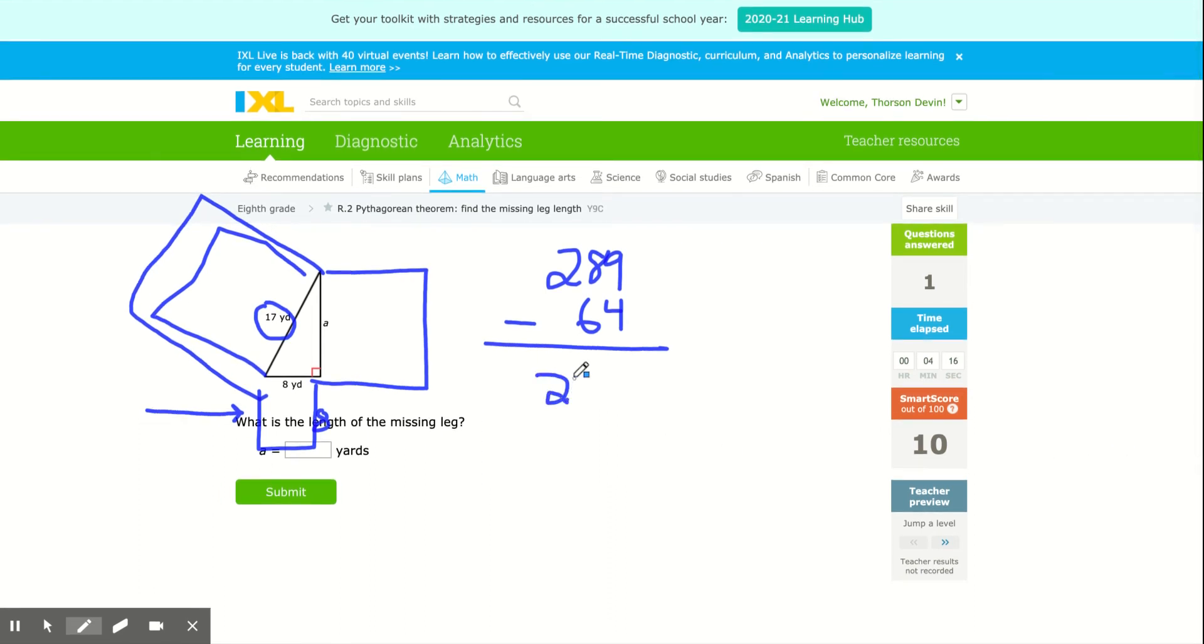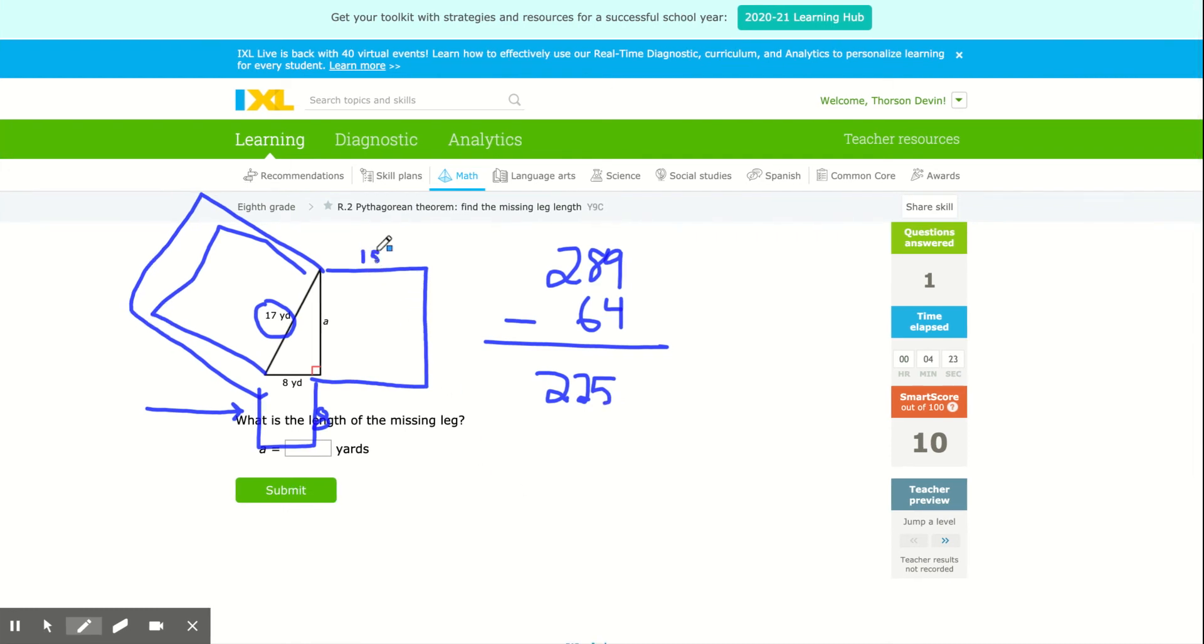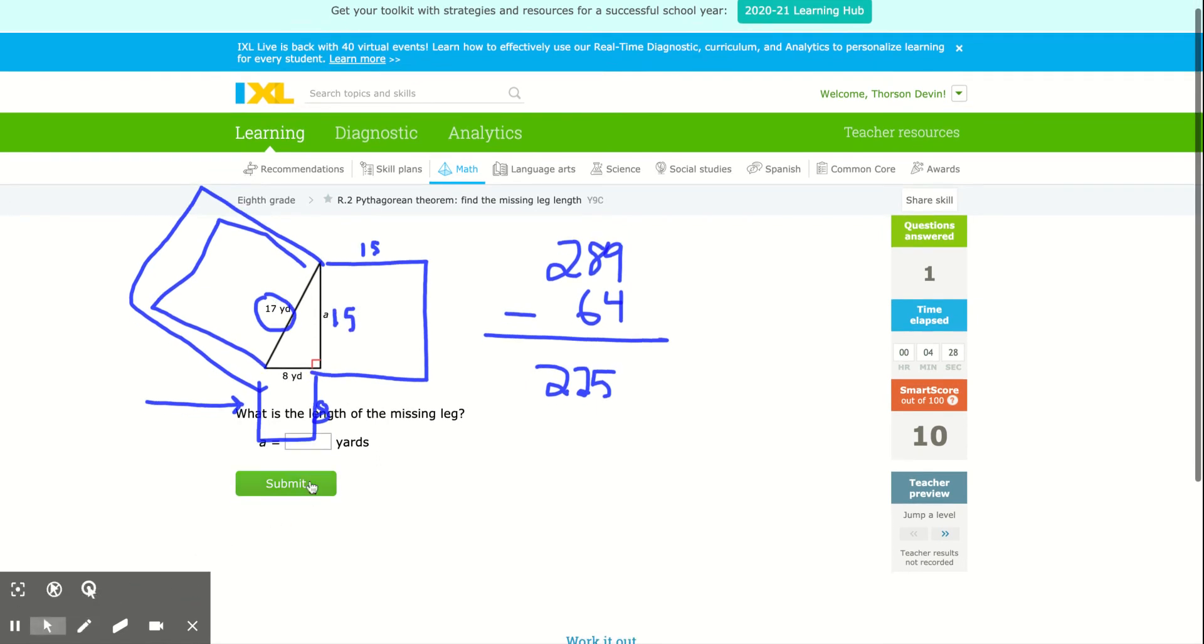And then we take our calculator and we square root 225 and find out that each of these side lengths has to be 15, because 15 times 15 is 225. So my side length is 15.